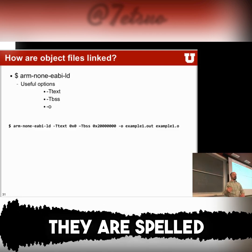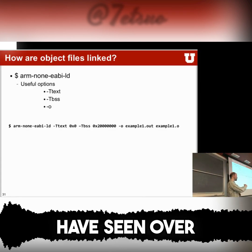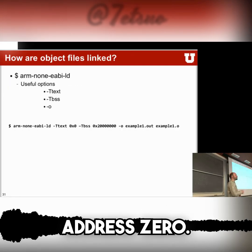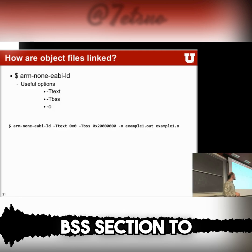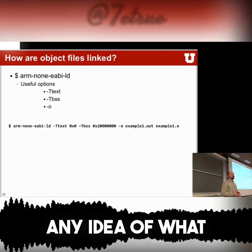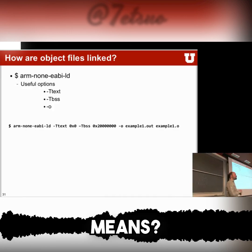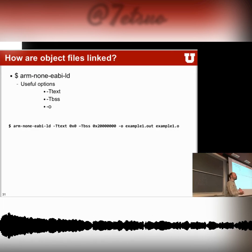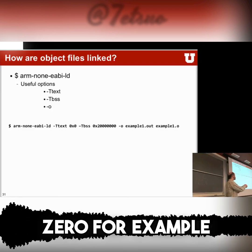In this case, they are spelled out specifically. We tell it that the .text section should be placed at address zero, and we want the BSS section to start at address 2000. Any idea what address zero and address 2000 mean? Could they be any number — could I put in zero and two, for example?